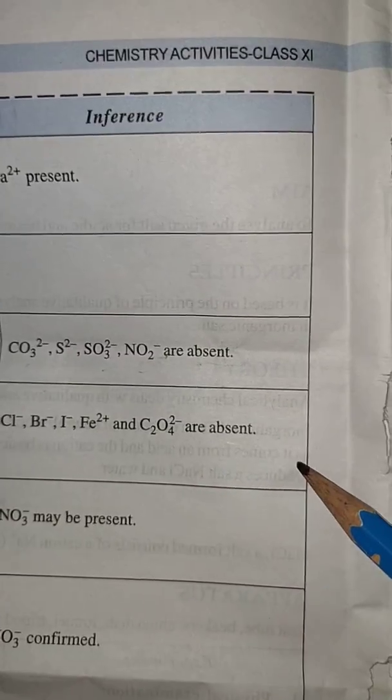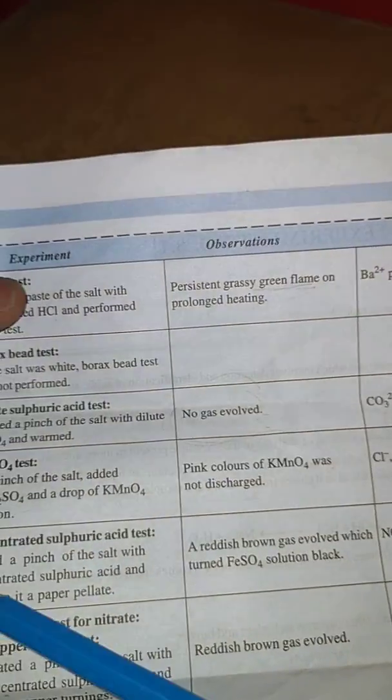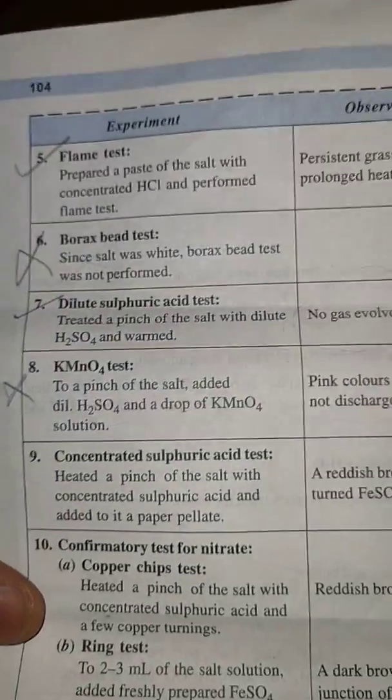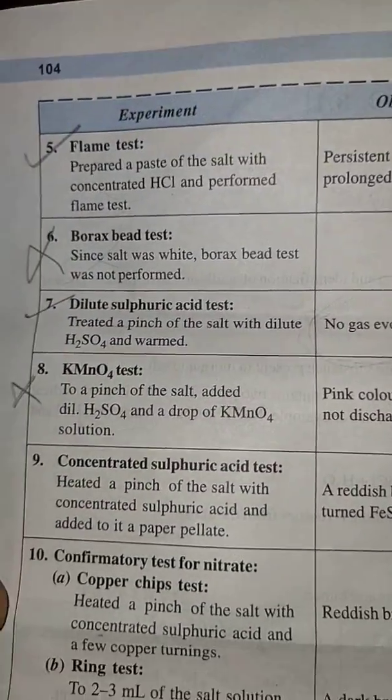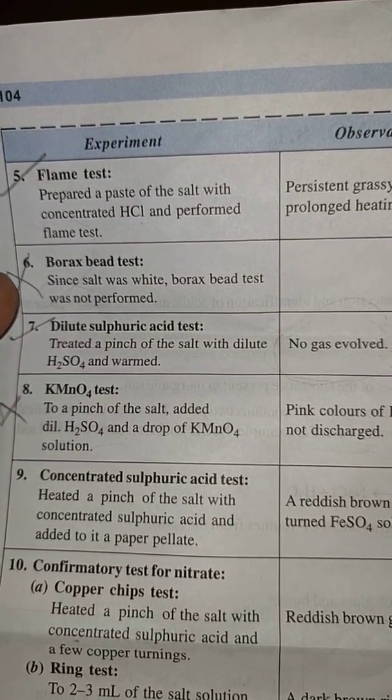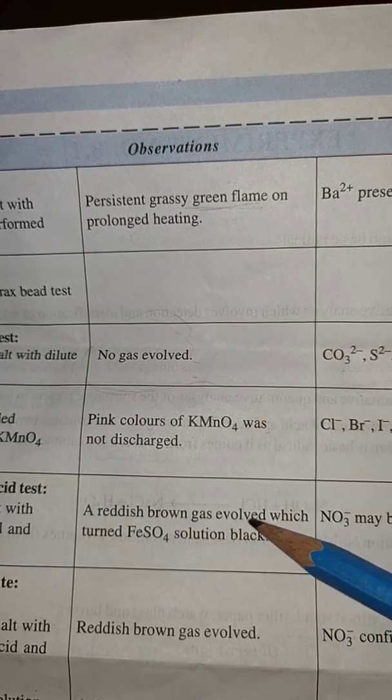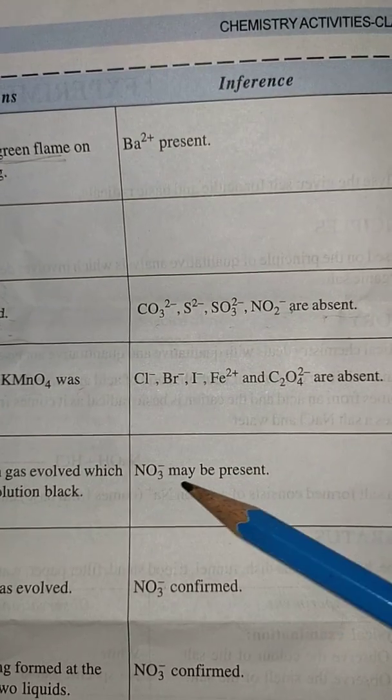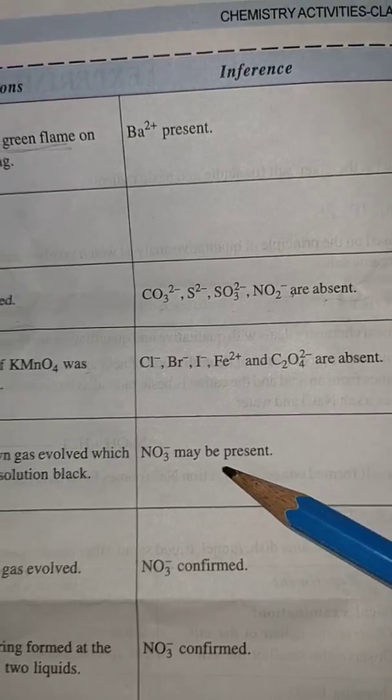Now come to the concentrated sulfuric acid test: heat a pinch of the salt with concentrated sulfuric acid. A reddish brown gas evolved which turns FeSO4 solution black. NO3⁻ may be present.